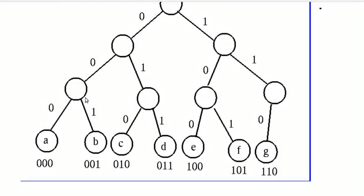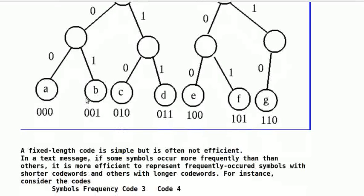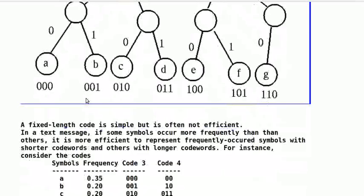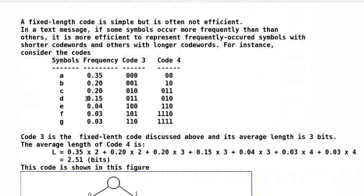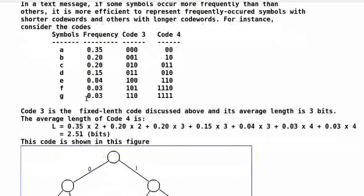A fixed length code is simple but is often not efficient. In a text message, if some symbols occur more frequently than others, it is more efficient to represent frequently occurred symbols with shorter codewords and others with longer codewords. For instance, consider the codes, code 3 and code 4. Code 3 is a fixed length code while code 4 is not.